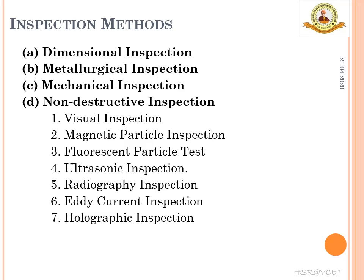Next is mechanical inspection, also known as destructive inspection. The name destructive inspection is because the parts to be inspected are partly or completely damaged during inspection. Various properties of the material like tensile strength, compression strength, shear strength, hardness, impact strength, etc. can be evaluated from this method.